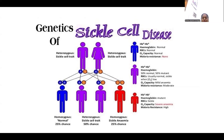Of the offspring, 25% are likely to get this disease. That means if both allelic forms of the hemoglobin gene are in the recessive form, the RBCs are sickle-shaped and their oxygen-carrying capacity reduces, which leads to severe anemic conditions.